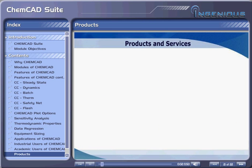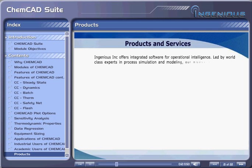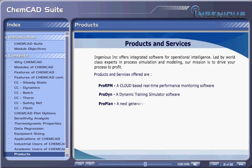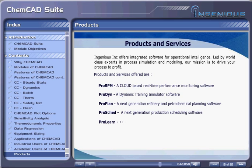Led by world-class experts in process simulation and modeling, our mission is to drive your process to profit. Products and services offered are: ProRPM, a cloud-based real-time performance monitoring software; ProDyne, dynamic training simulator software; ProPlan, a next-generation refinery and petrochemical planning software; ProSJade, a next-generation production scheduling software; ProLearn, an e-learning software; and process consulting services including process engineering, design, and simulation.